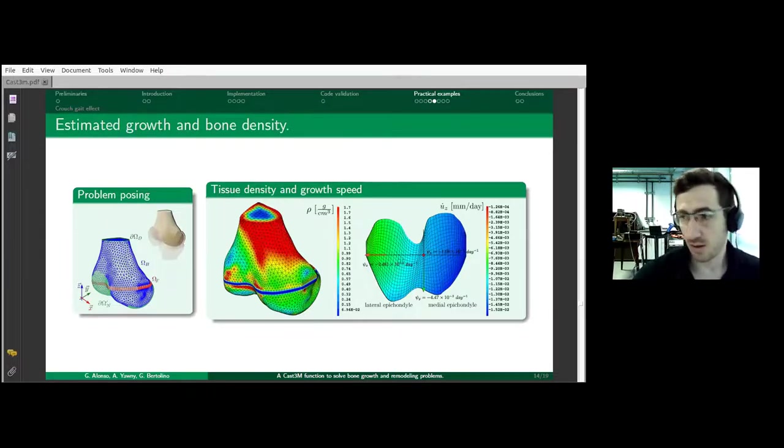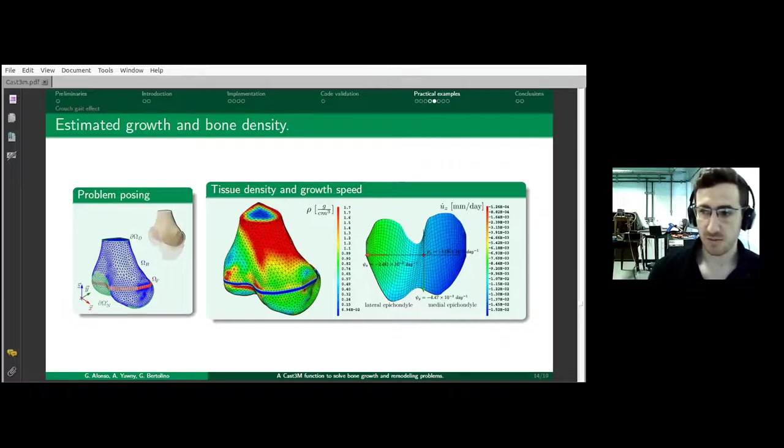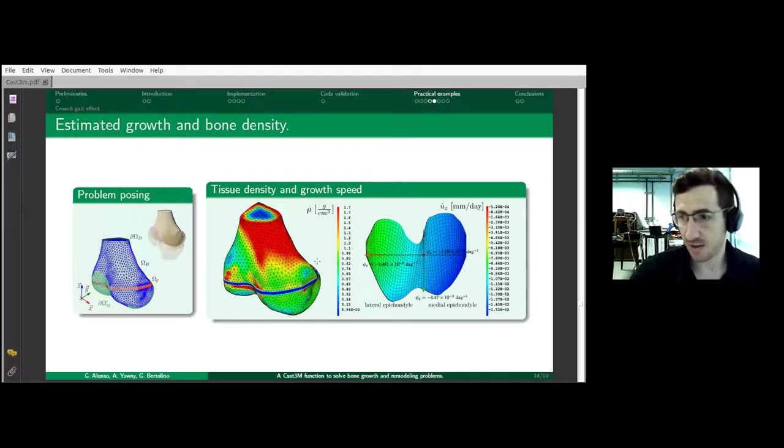The result is that due to asymmetrical loading, there is faster growth on this side than on this side, and this gives rise to an angular deviation. For research purposes, we can compute this kind of thing and use it to investigate the effect of different walking patterns, for example.